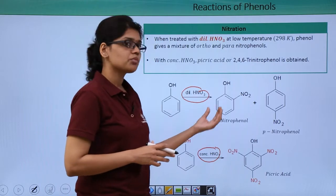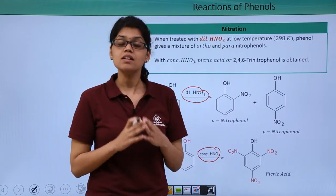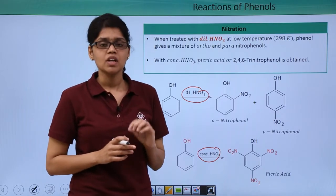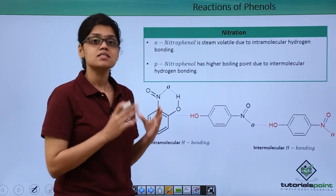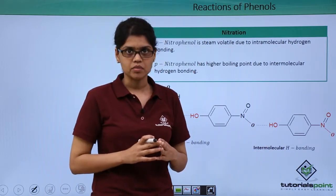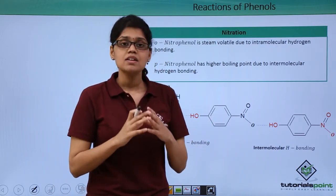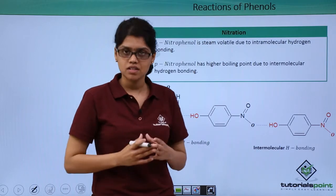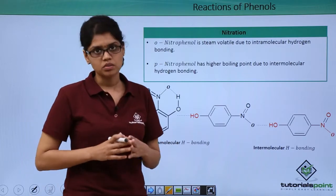In the first reaction where we get a mixture of ortho-nitrophenol and para-nitrophenol, we can easily separate these two compounds via steam distillation, mainly because they differ in their boiling points. Ortho-nitrophenol has intramolecular hydrogen bonding, whereas para-nitrophenol has intermolecular hydrogen bonding. Para-nitrophenol molecules are connected to each other via extensive hydrogen bonding, requiring more energy to convert them to the gaseous state. Therefore, para-nitrophenol has a higher boiling point compared to ortho-nitrophenol.